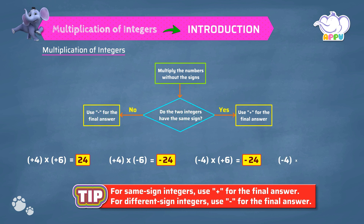Minus 4 into minus 6. To find the product of minus 4 and minus 6, we first find the product of 4 and 6, which equals 24. Here minus 4 and minus 6 are both negative integers, so we use plus for the final answer. So the answer is 24.